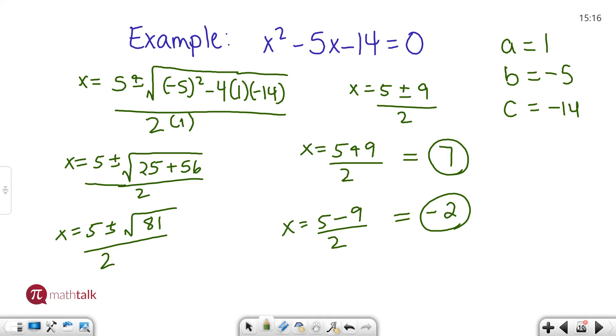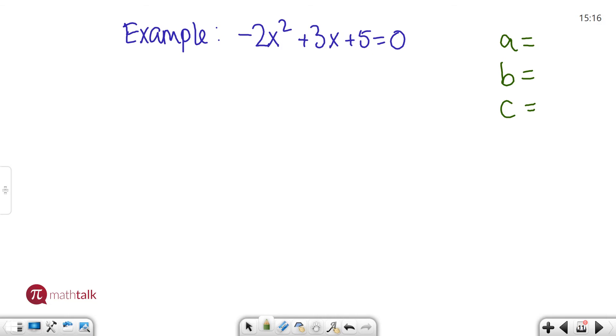All right. Let's look at one more example. Negative 2x squared plus 3x plus 5 equals 0. So the first thing is to find out what a, b, and c are. A is always in front of your x squared term. So I have negative 2. B is always in front of your x term. So I have positive 3. And then c is always the number that's by itself. In this case, 5.